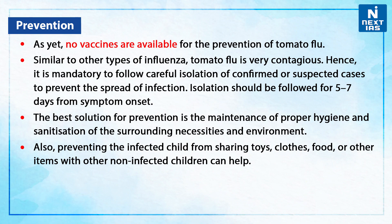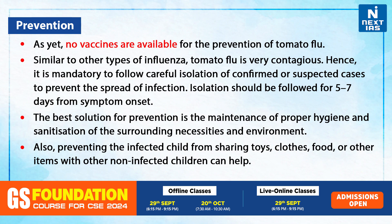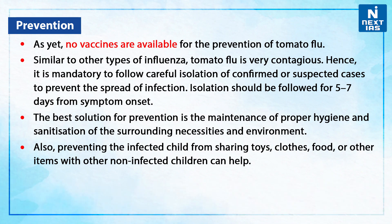Lastly, let us discuss about its prevention. As yet, no vaccines are available for the prevention of tomato flu. Similar to other types of influenza, tomato flu is very contagious. Hence, it is mandatory to follow careful isolation of confirmed or suspected cases to prevent the spread of infection. Isolation should be followed for five to seven days from the onset of symptoms. The best solution for prevention is the maintenance of proper hygiene and sanitization of the surrounding necessities and environment. It is also important to prevent the infected child from sharing toys, clothes, food, and other items with non-infected children.